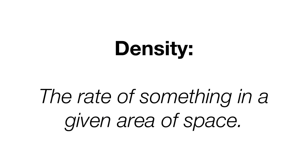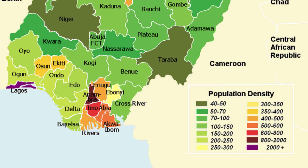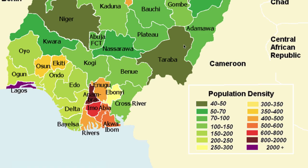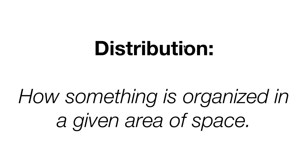Density is the rate of something in a given area of space. Density could be arithmetic or physiological. On this map, you have a population density map — you can see the darker areas like Lagos that are mostly densely populated, and then the lighter areas like Taraba, which are the least densely populated.